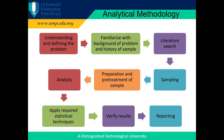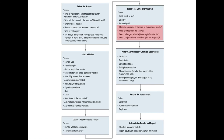Next is analytical methodology — a set of techniques that allow us to know qualitatively and/or quantitatively the composition of any material or chemical. First, you need to understand and define the problem, then familiarize yourself with the background and history of the sample. After that, do a literature search and compare with similar previous studies. Then start the sampling process, sample preparation and pretreatment, and perform the analysis. Once you have obtained the results, apply required statistical techniques to verify them and produce a report.